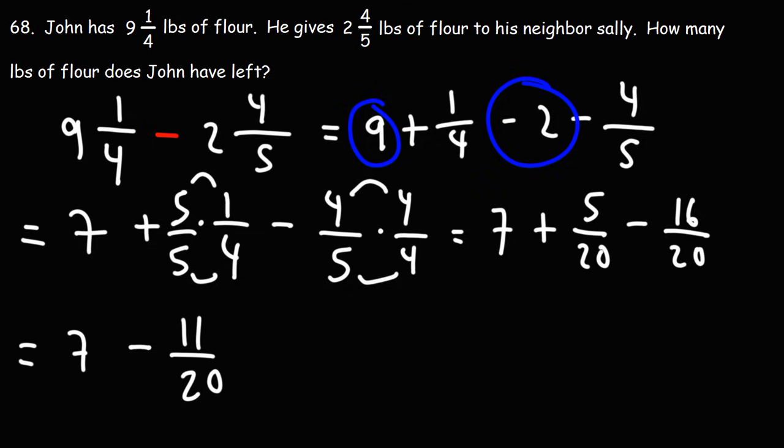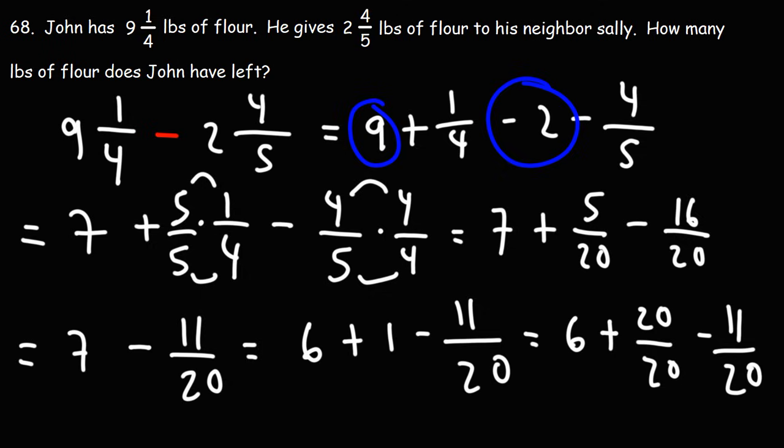What should we do here? What we can do is we can borrow a one from seven. So seven is six plus one. And this one, we can multiply it by 20 over 20. So we have six plus 20 over 20 minus 11 over 20, because 20 divided by 20 is one. So now we have six plus 20 minus 11 is nine, so this is nine over 20. And as a mixed number, this will be six and nine-twentieths.